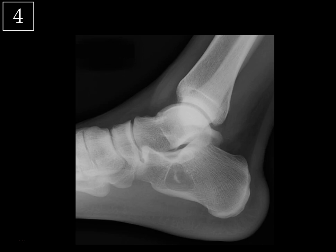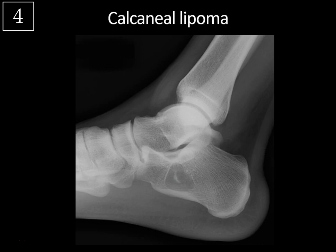This is a lateral x-ray of the ankle. We don't see any fracture, but there's a well-circumscribed lucency in the anterior aspect of the calcaneus, and more closely you can see a central calcification as well. This is typical for a calcaneal lipoma — an intraosseous lipoma that is completely benign. The calcaneus is the most common location for intraosseous lipomas. That central calcification is known as the cockade sign; you might also see ossification or fat necrosis on CT. Without the central calcification, the differential in the calcaneus would include unicameral bone cyst.